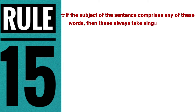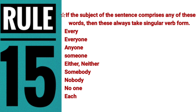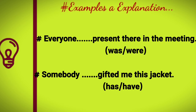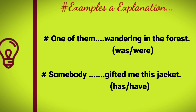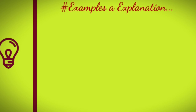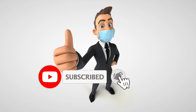The fifteenth rule: if the subject contains words like 'every,' 'everyone,' 'anyone,' 'someone,' 'either,' 'neither,' 'somebody,' 'nobody,' 'no one,' or 'each,' they always take singular verb form. For example: 'Everyone was present in the meeting,' 'Somebody has gifted me this jacket,' and 'One of them was wandering in the forest' — all take singular form. Please subscribe to my channel, keep smiling, keep learning, stay home and stay safe. Thank you so much.